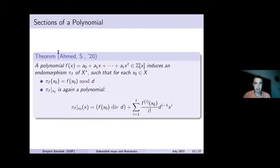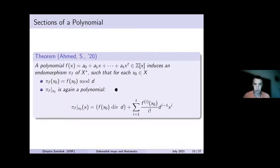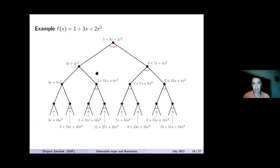Let me mention a theorem from joint work with Ahmed, published last year. We explicitly described the sections of polynomial transformations: if you have a polynomial with integer coefficients, we can explicitly describe what the sections are and what the action on the first level is. The sections turn out to also be polynomials of the same degree. We also have results about transitivity and the permutational structure of these endomorphisms, but that's not the main focus of this talk.